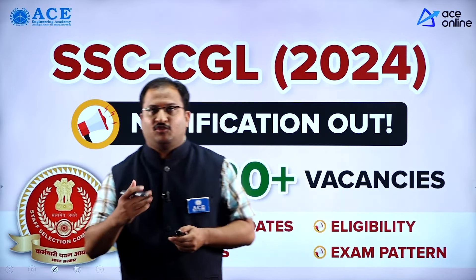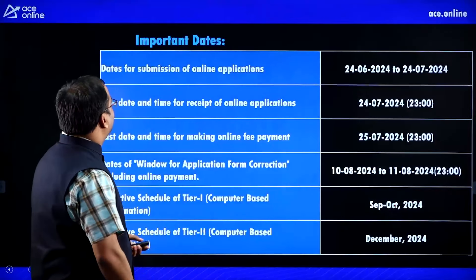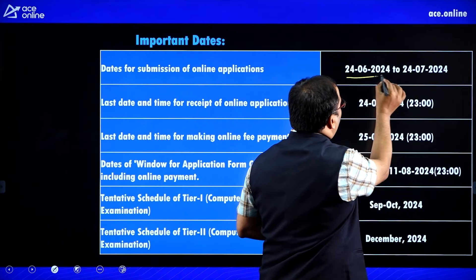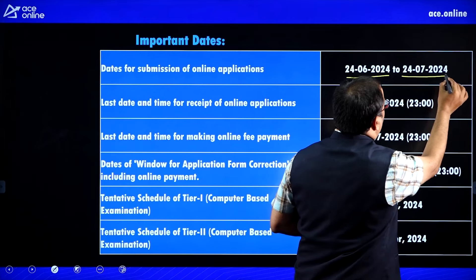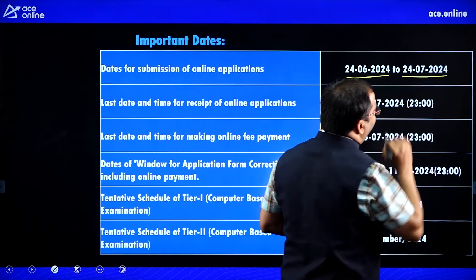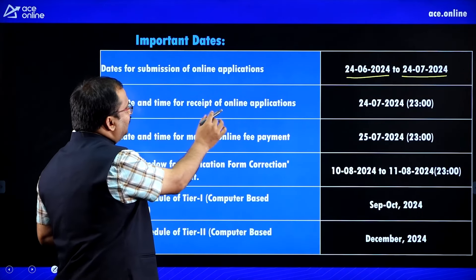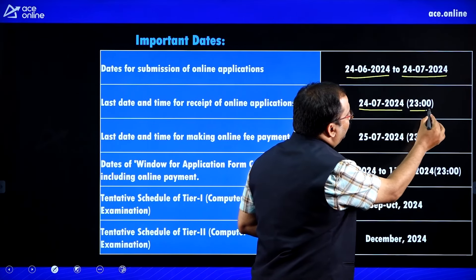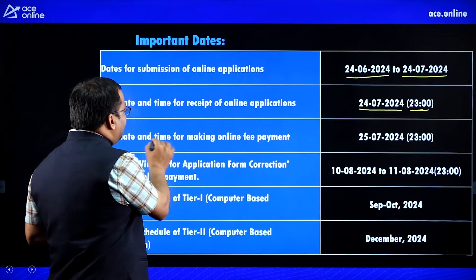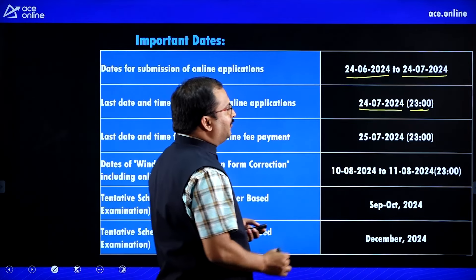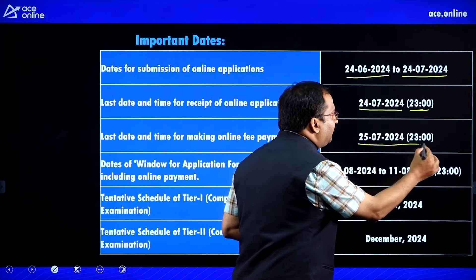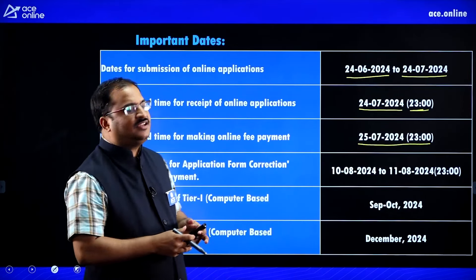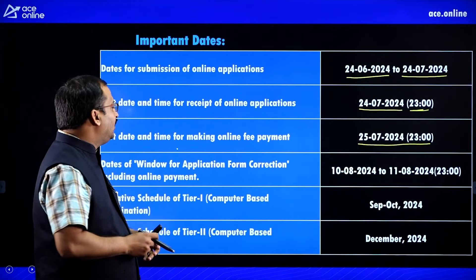First let us discuss about the important dates. Dates for submission of online application start from 24th June 2024 and end on 24th July 2024. The last date and time for receipt of online application is 24th July 2024 up to 11 PM. The last date for making online fee payment is 25th July 2024 up to 11 PM.